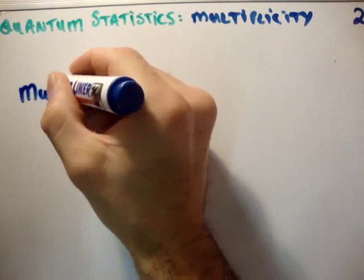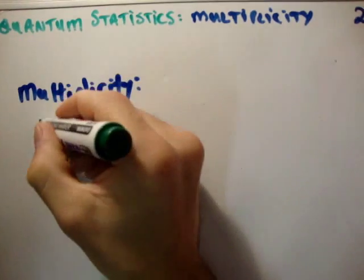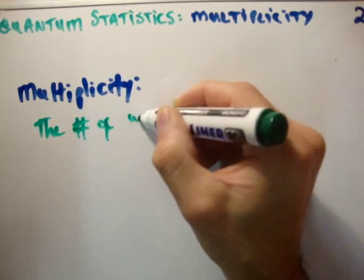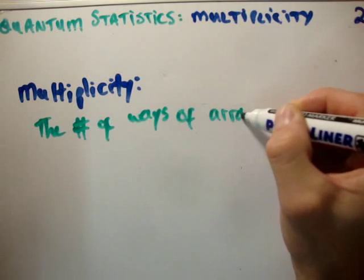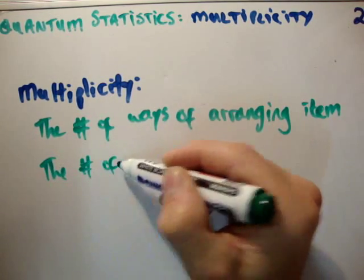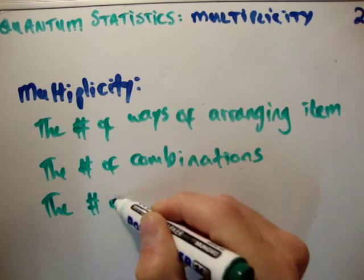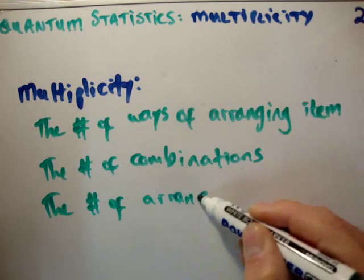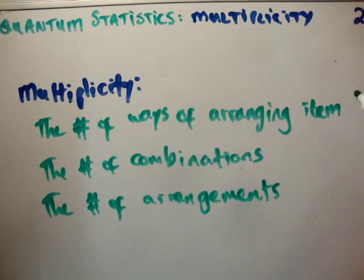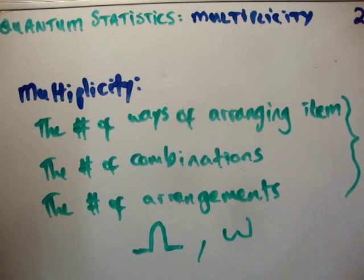I'm going to define multiplicity as the number of ways of arranging items or particles or whatever, or the number of combinations or the number of arrangements. This is called the multiplicity, and we give it the following symbol, sometimes you'll see this symbol. It doesn't really matter, as long as you know that you're talking about the multiplicity, the number of combinations, arrangements, whatever it is.